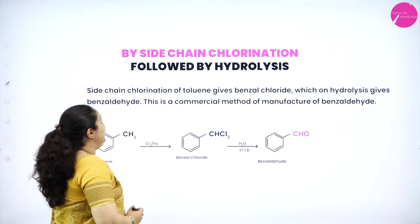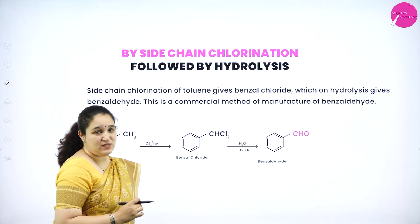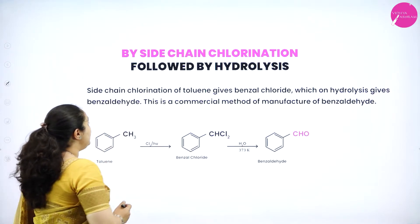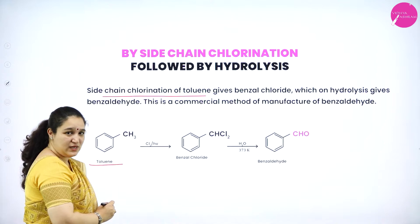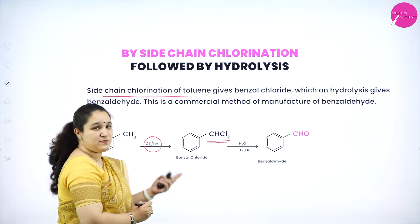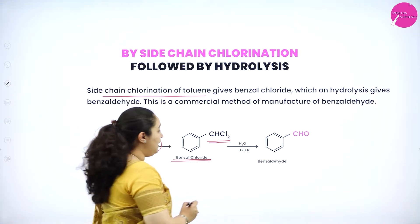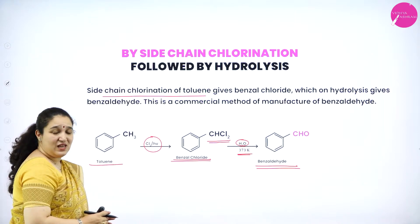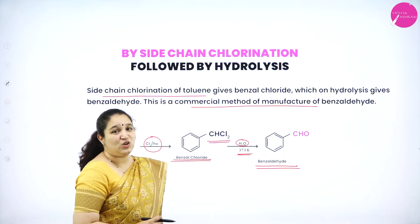The next method of preparation of aldehyde is by side chain chlorination followed by hydrolysis. This method is specially for preparation of benzaldehyde, in which side chain chlorination of toluene is happening. We take toluene — benzene ring with a CH3 group — treated with chlorine in the presence of sunlight to get CHCl2, that is benzal chloride, where two hydrogen atoms have been substituted with chlorine. This on further hydrolysis at 373 K gives benzaldehyde. This is the commercial method of manufacture of benzaldehyde.